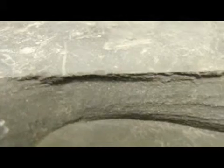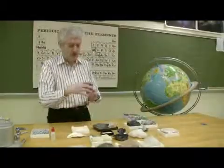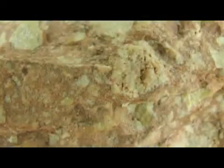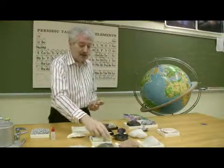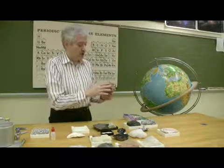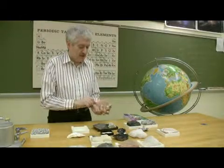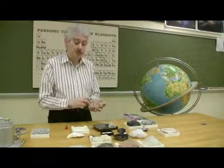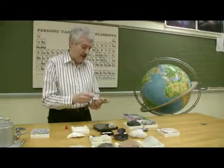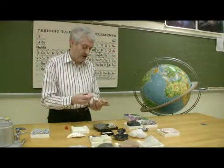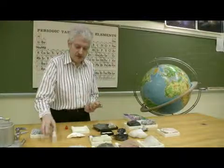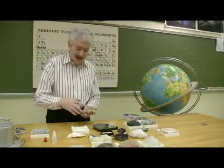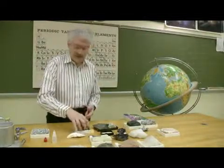Another example is limestone. Limestone forms when the mineral calcite, dissolved in ocean water, precipitates and forms the rock at the bottom of the ocean. The best way to identify limestone is if you put dilute acid on it — like vinegar, for example — you'll get a little bit of bubbling and fizzing due to the chemical nature of the rock reacting with the acid.